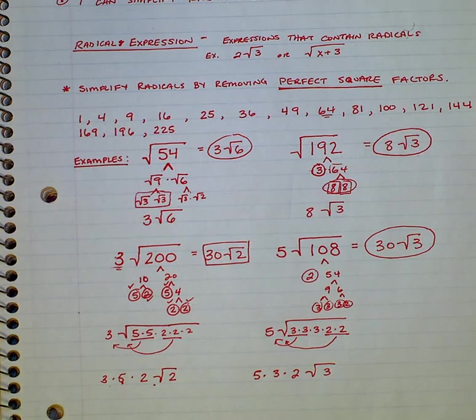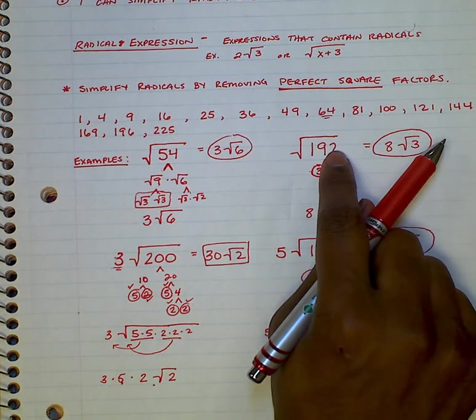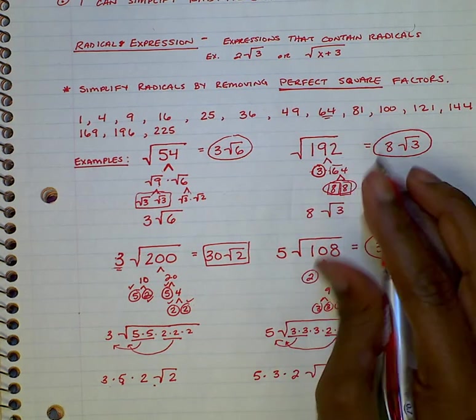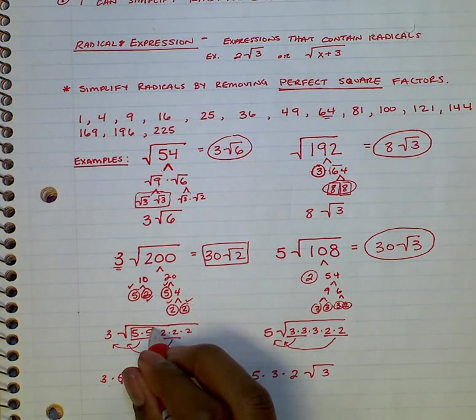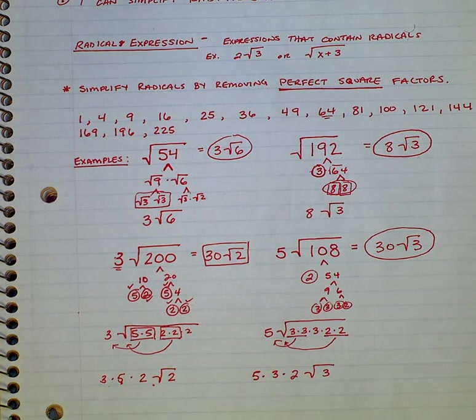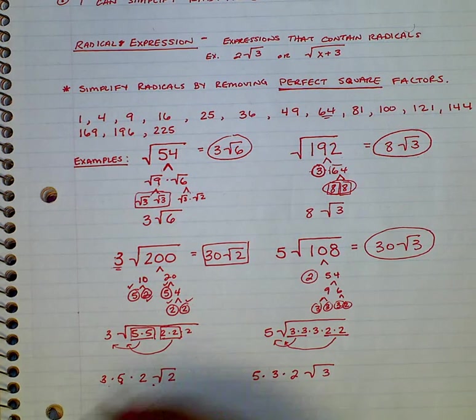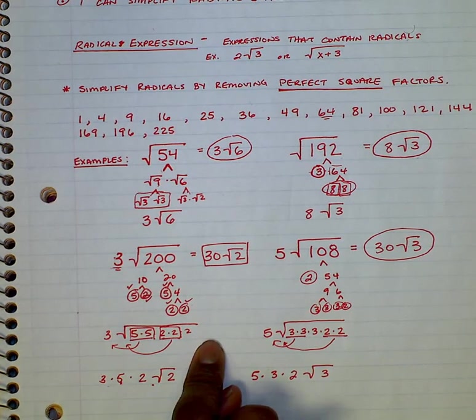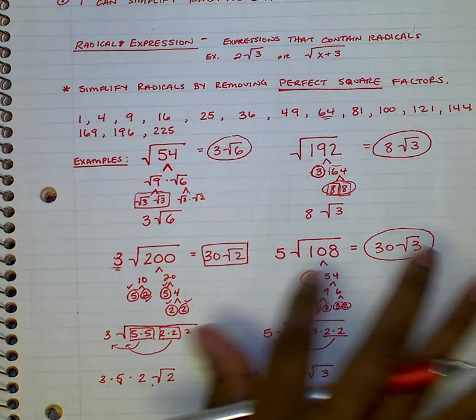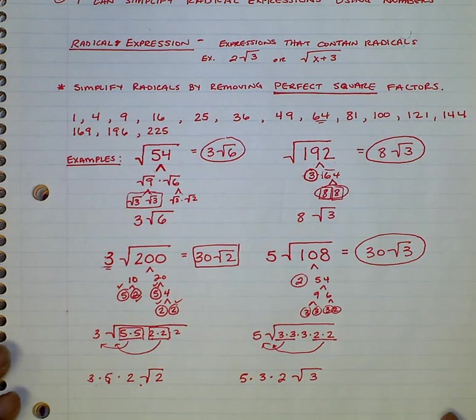So this is simplifying radicals with numbers using the number tree. Remembering that we break down our number by finding factors here, looking for perfect squares as we come out. If we can't find the perfect squares, then we are able to take our factors and pair them up. Any number with a factor goes to the outside. Any number without a partner stays inside. When they go outside, you multiply them. If they stay inside, they're two separate numbers, you multiply them. We'll work on some more problems like this tomorrow. Have a good one.